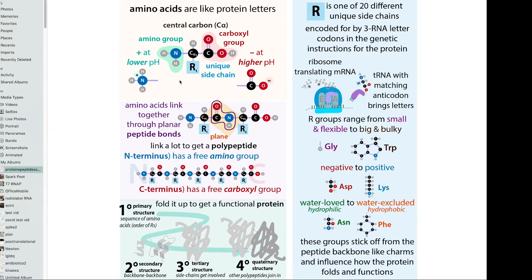Then we have this amino group - a nitrogen with hydrogens - and then we have a carboxyl group, which is the carbon double bonded to an oxygen and then bonded to an OH. This can also be a carboxylate group at a higher pH. The amino group can also gain a proton, so you'll see these with different charge states depending on the pH.